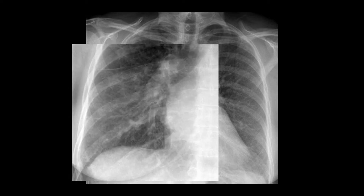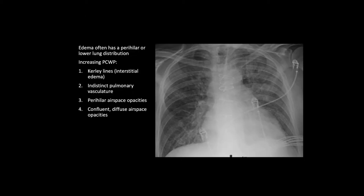Practice will make perfect, but in this zoomed-in version you can really hang your hat on the presence of these small horizontal lines that touch the pleural surface — these are Kerley B lines. So this patient has interstitial pulmonary edema.